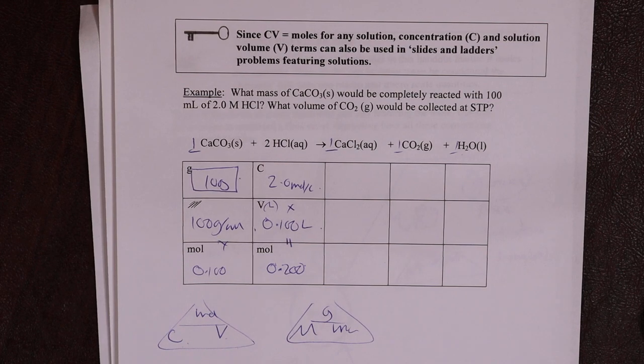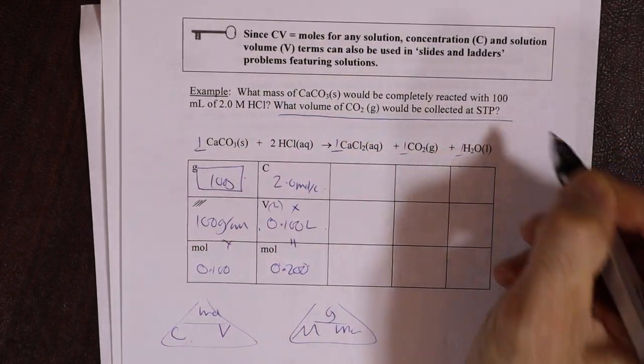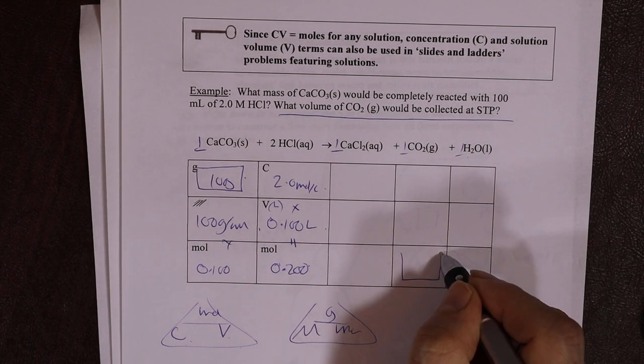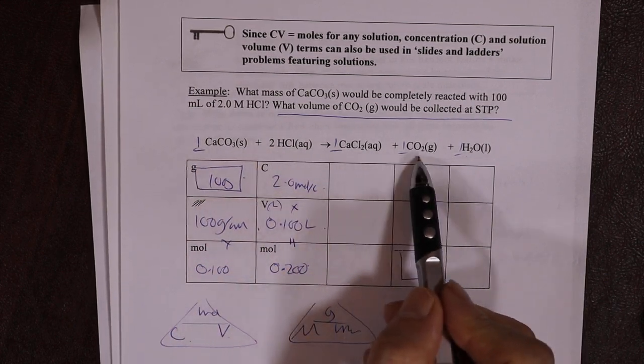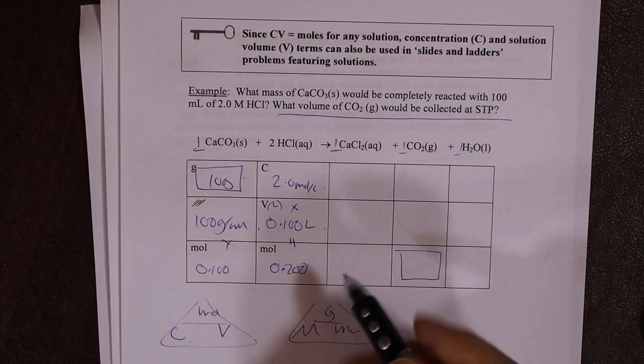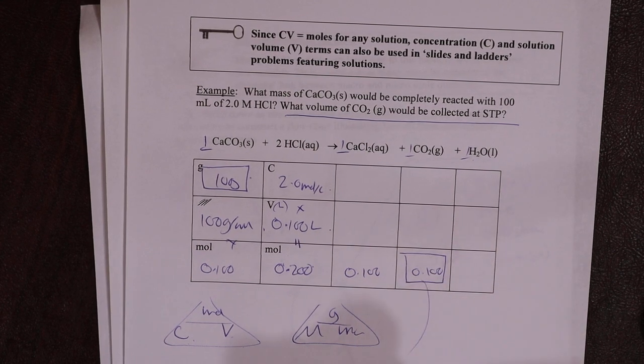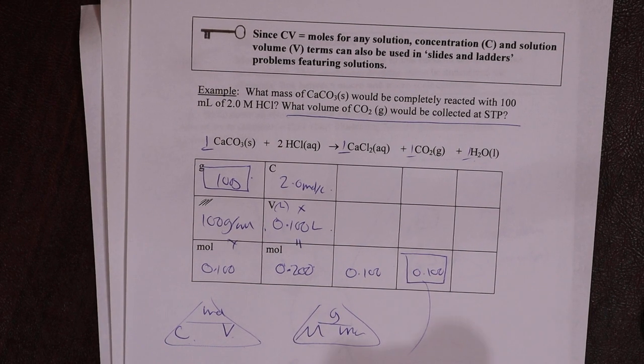Now, oh, I forgot one thing. Look what I did. What volume of CO2 would be collected? Well, again, we don't have a box for volume, but 1 reacts with 2 to make 1, 1, and 1. So 0.1, 0.2, 0.1, 0.1. Okay. So 0.1 moles CO2 is what we'd make.